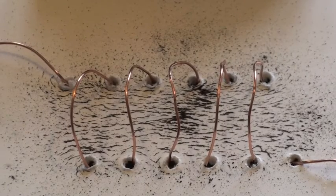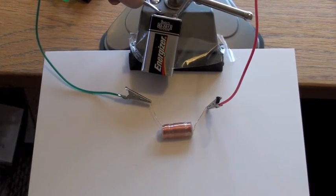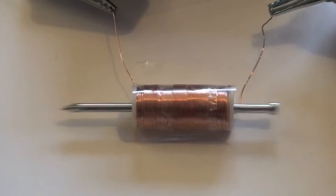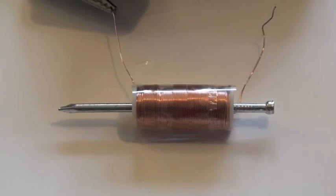Returning to the small coil, notice what happens when we put a nail near the end of the coil and then we switch the current on. The nail is jerked into the coil.